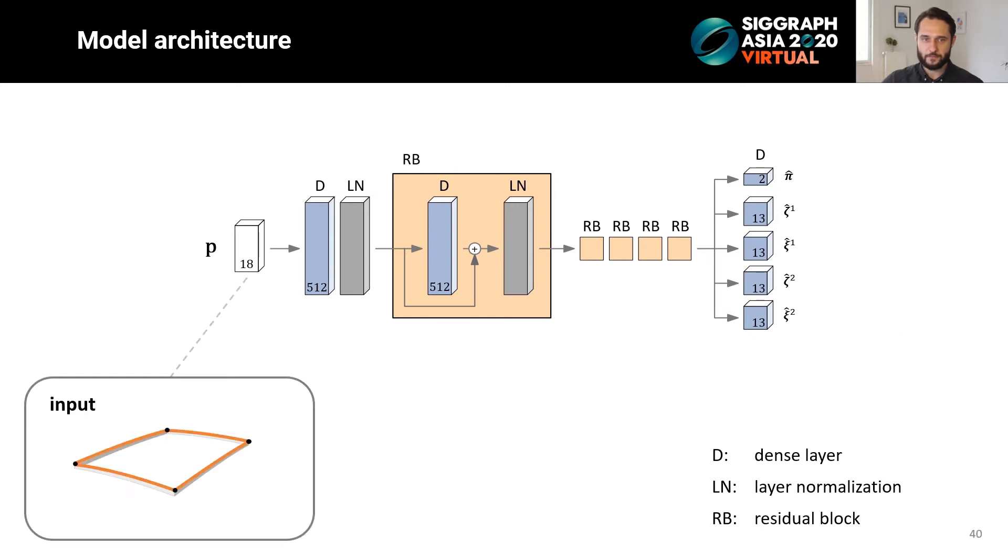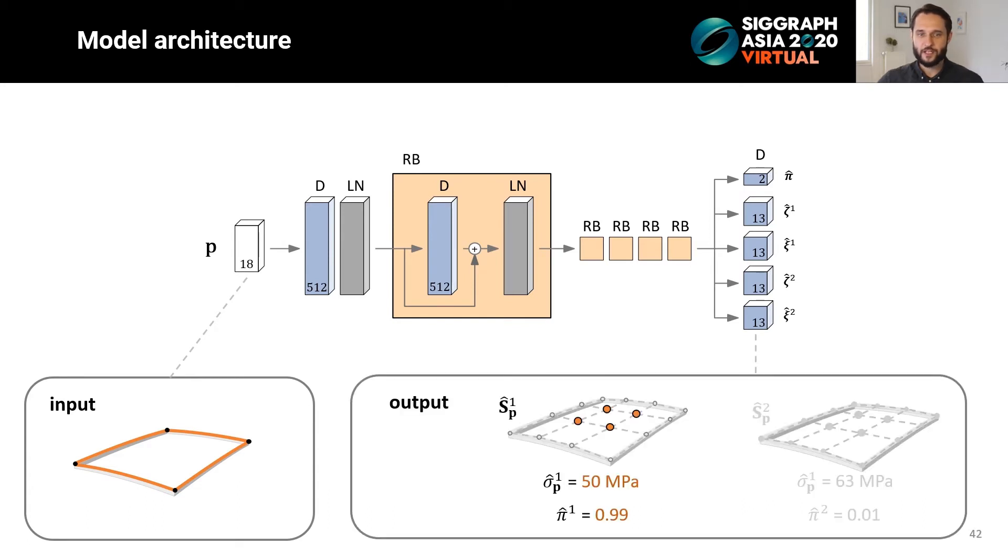The architecture is shown here. The input is a panel boundary p, which is propagated through six dense layers, each with 512 exponential linear units. Residual connections and layer normalization are used at each hidden layer. The final layer outputs two Gaussian distributions, each with its own mean zeta and variance xi. Each Gaussian is weighted by a probability coefficient pi. Each of the two Gaussian means contains the interior control points and maximal stress of the panel. In short, for an input boundary, the output of the model is two panels, each with its shape s and stress sigma, weighted by a probability coefficient.